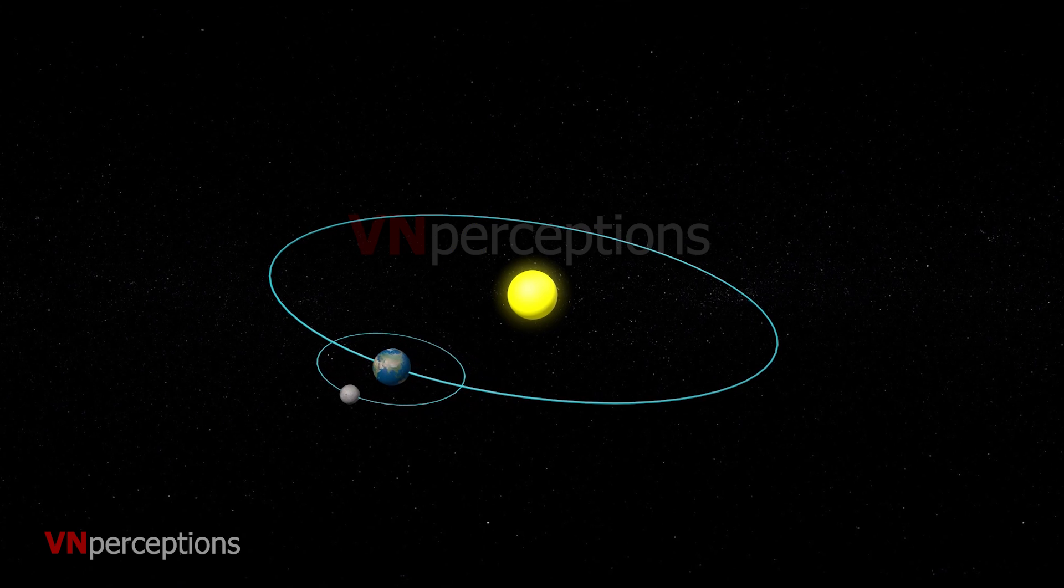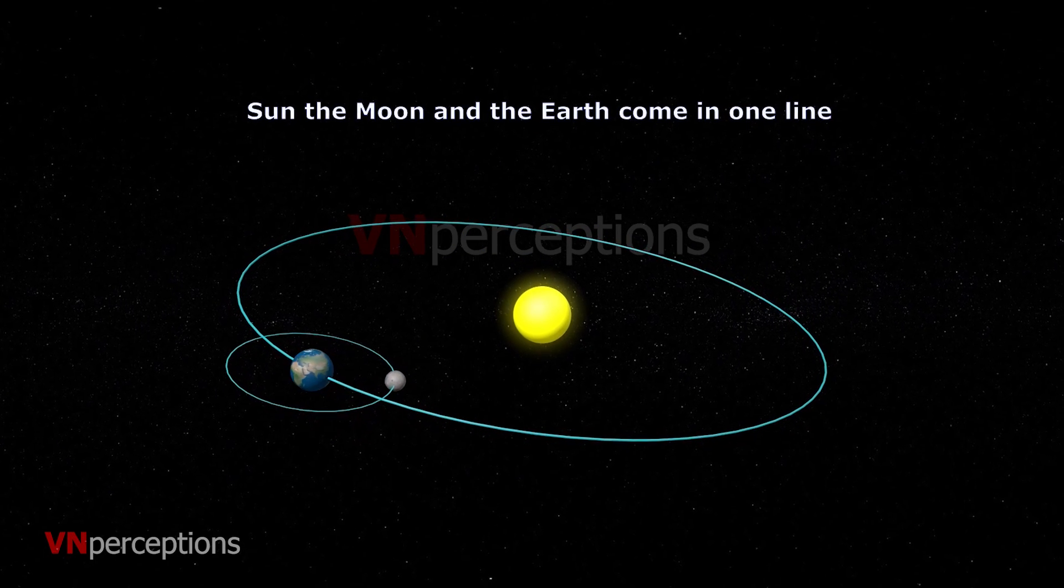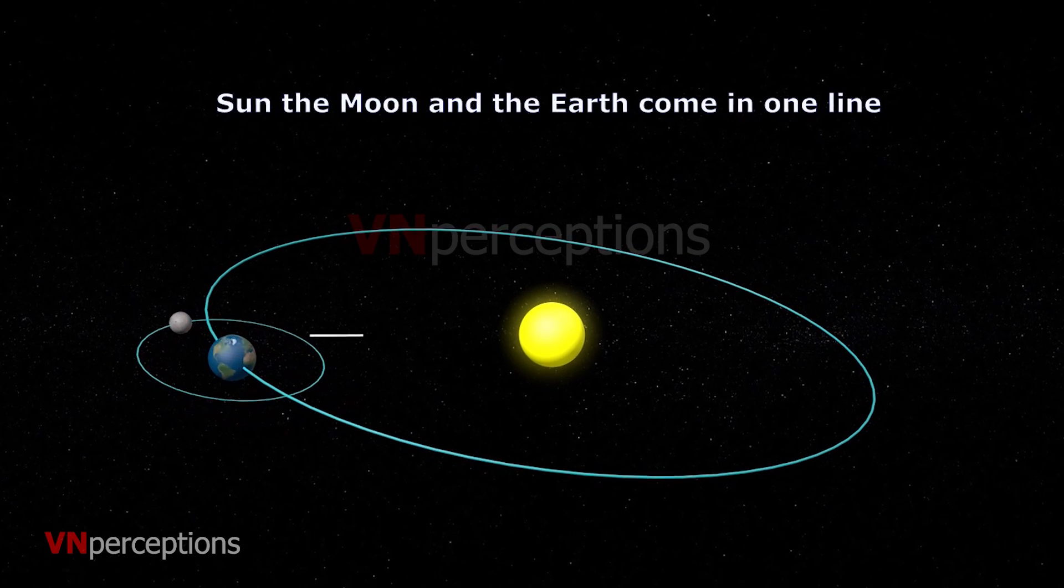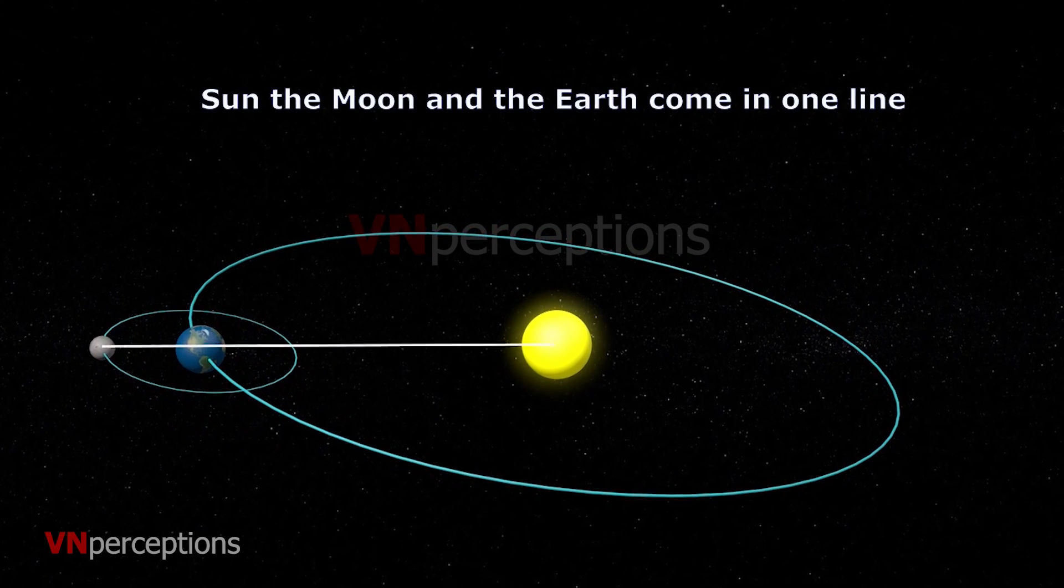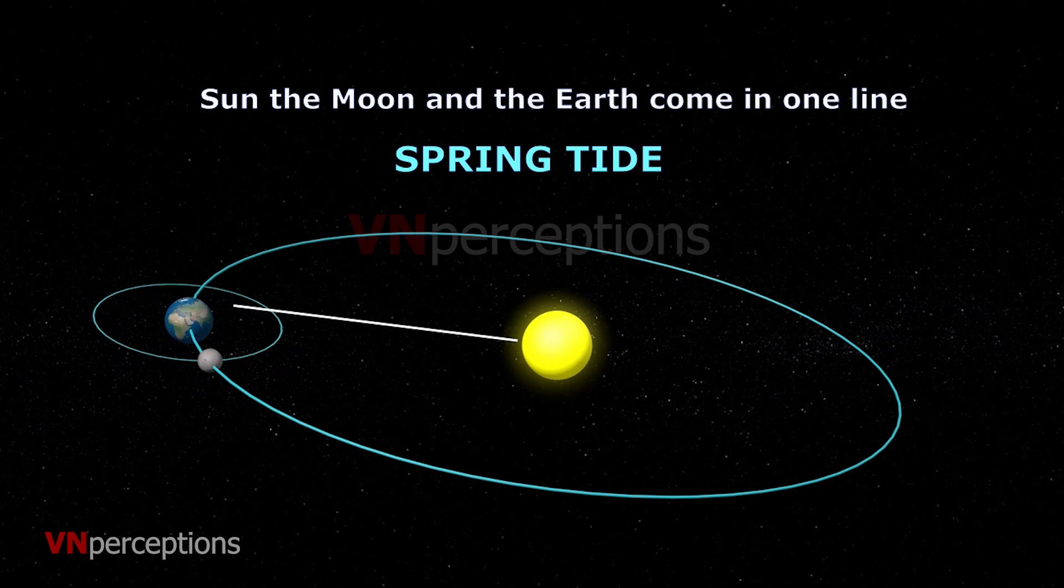Whenever the sun, moon and the earth come in one line, the tidal center would experience a high tide 20% more than the normal tide. And this is referred to as spring tide. This can happen on a full moon day or a new moon day.